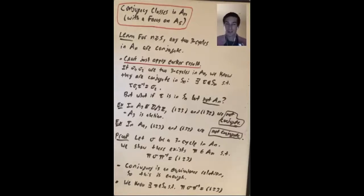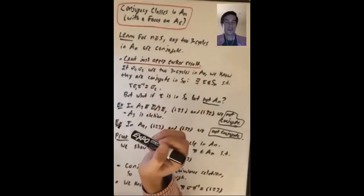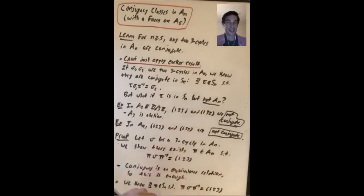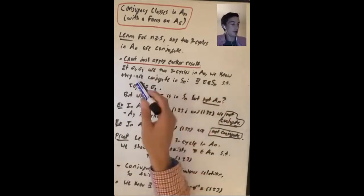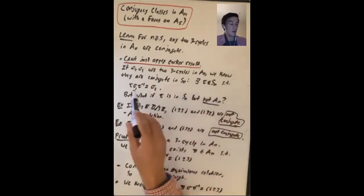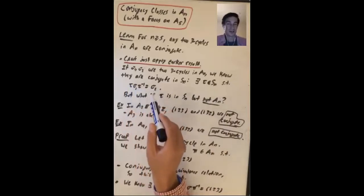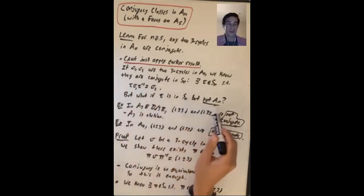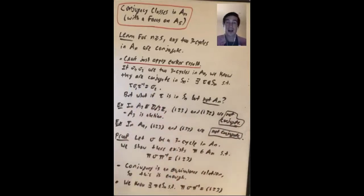I'll start with something that'll be really important to our later proofs. For N at least 5, any two 3-cycles in AN are conjugate to each other. We can't just take our earlier result that says for any two permutations in SN with the same cycle type, they're conjugate. Because even though permutations in AN are contained in SN, if we have two 3-cycles sigma1 and sigma2 in AN, we know they're conjugate in SN — there is some tau in SN where tau·sigma1·tau⁻¹ = sigma2. But if tau is in SN but not in AN, this does not say they are conjugate elements of AN.